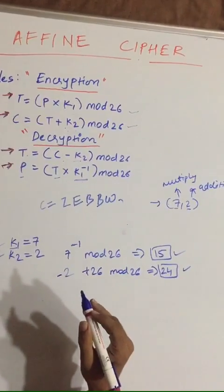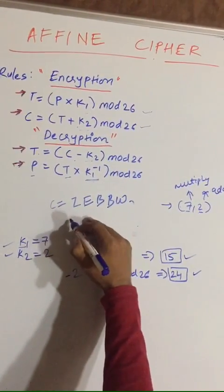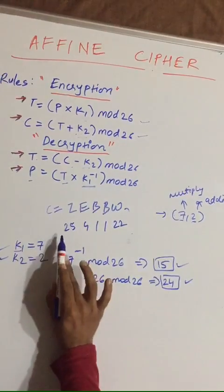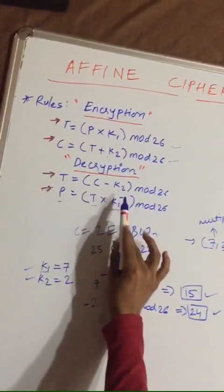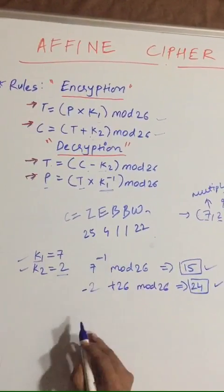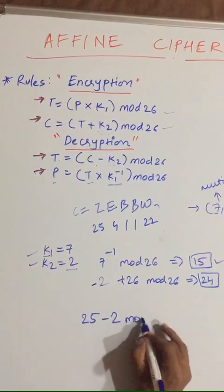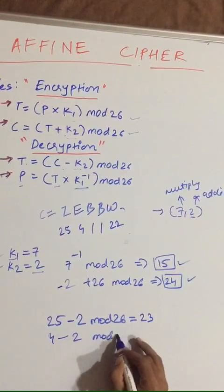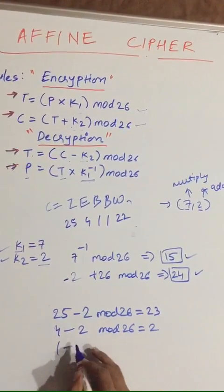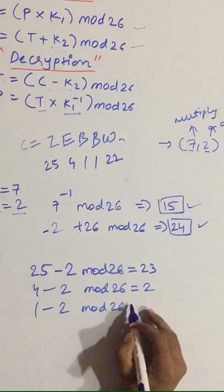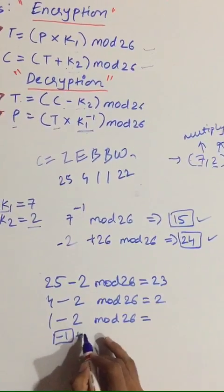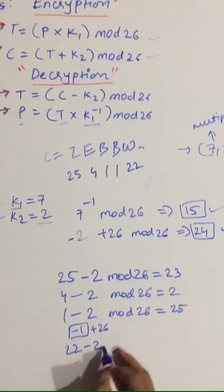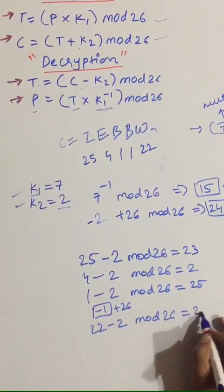For Z, what is the value? It will be equal to 25, 4, 1, 1, and 22. The decryption part first portion is C minus k2. You have to subtract 2 from 25, so 25 minus 2 mod 26 equals 23. 1 minus 2 mod 26 will be minus 1, so you have to add 26, which gives 25 mod 26 equals 25. For 22 minus 2 mod 26 equals 20.